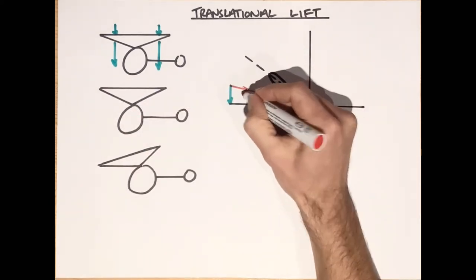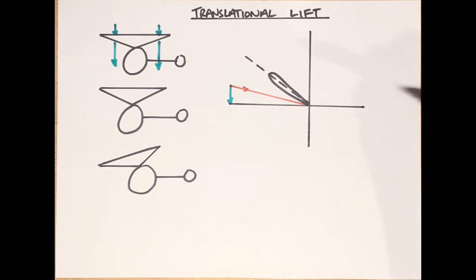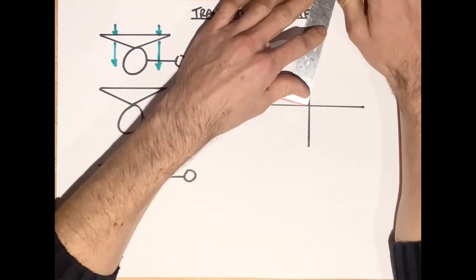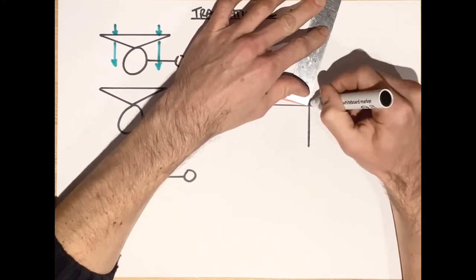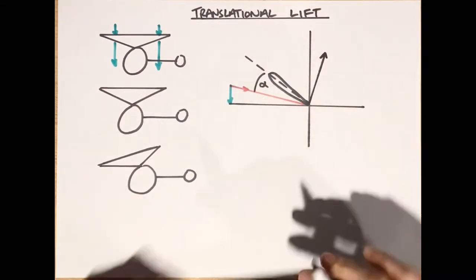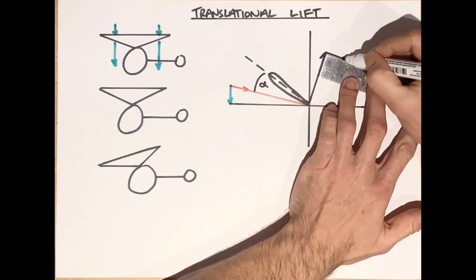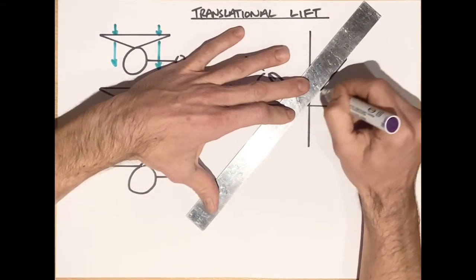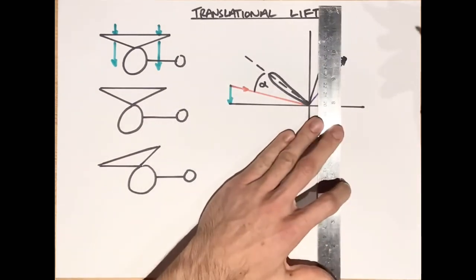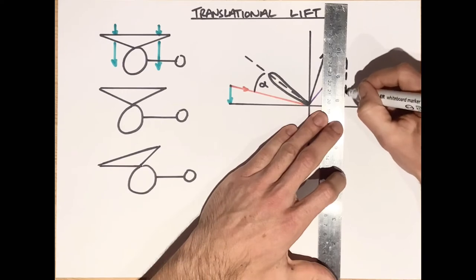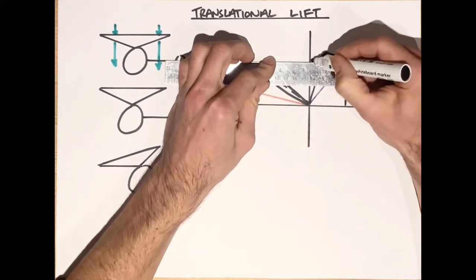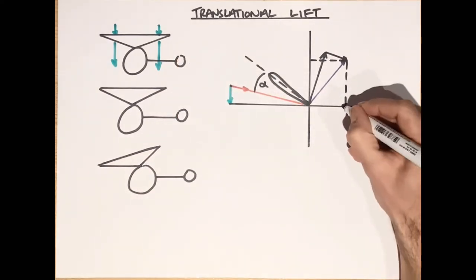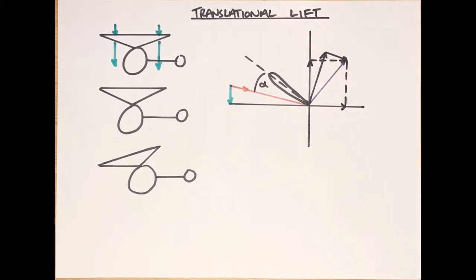The induced flow coming down through the disc adds a vertical component to our rotational airflow. That vertical component has the impact of shifting our relative airflow, and that shift in the relative airflow reduces our angle of attack. The reduction in angle of attack therefore reduces the lift and to a certain extent the drag, but it sets us up with our requirement for rotor drag and our total rotor drag. So that's us in the hover.